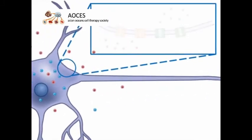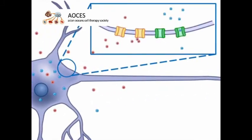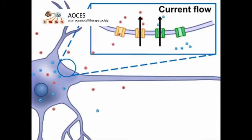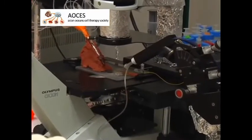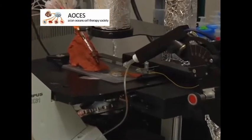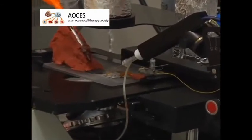Ion channels help maintain the gradient by controlling the movement of ions across the cell membrane, which are essentially electrical currents. Using the patch clamp technique, scientists ask questions about the nature of the potential and current.